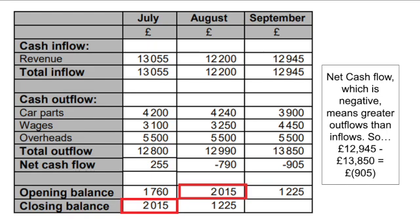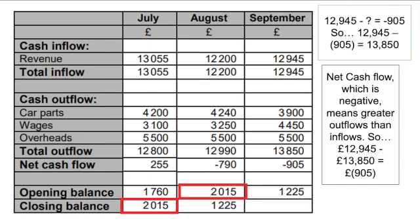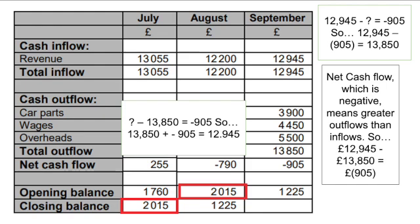In some questions you might be given some information but not all of it. You might be given the net cash flow but be missing your total outflows. In that case, rearrange the formula: take your inflows of £12,945 and minus the net cash flow. Because it's already a minus, you're minusing a minus — so you add them — giving £13,850. Alternatively, if you have outflows but not inflows, add the outflows to the net cash flow: £13,850 plus minus £905 gives £12,945.